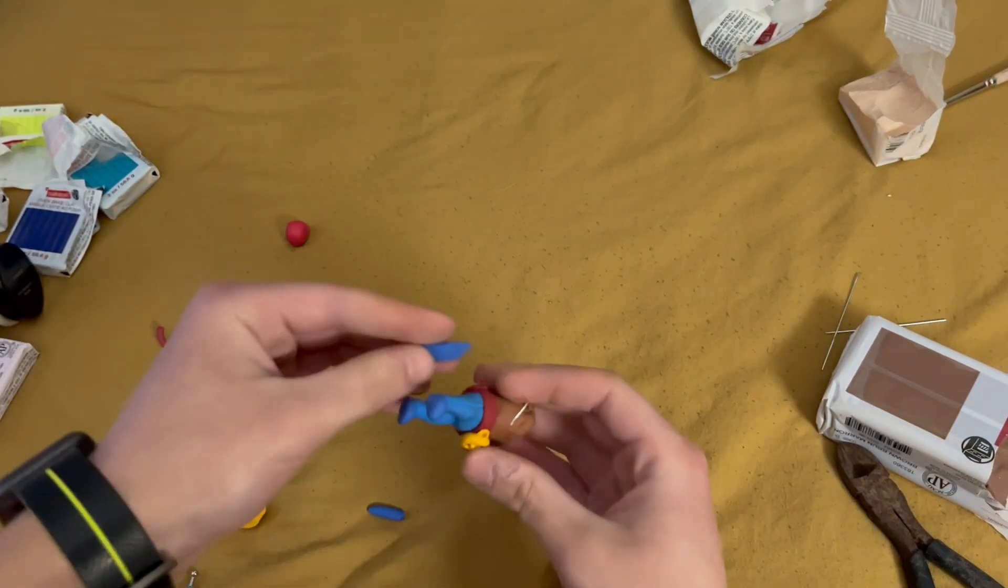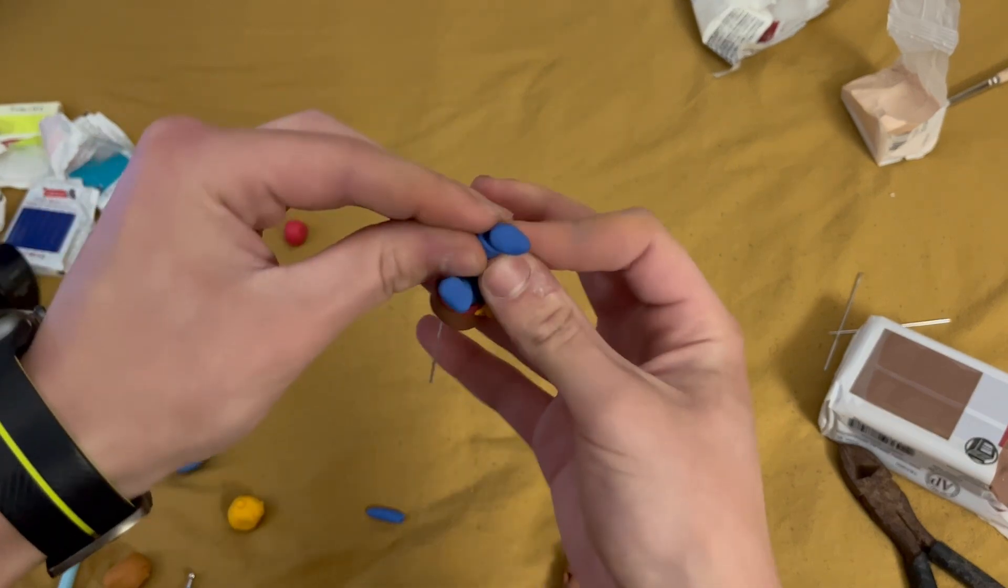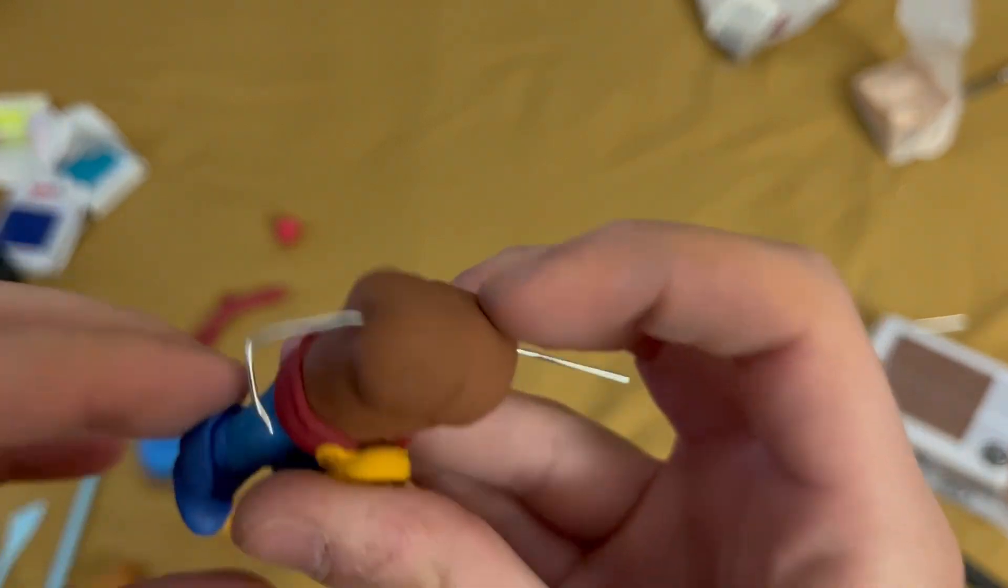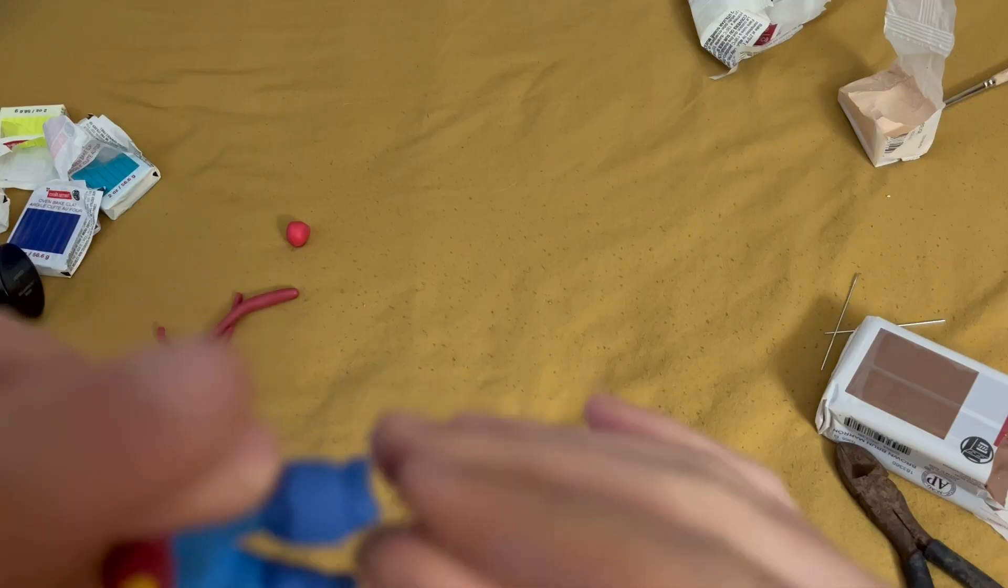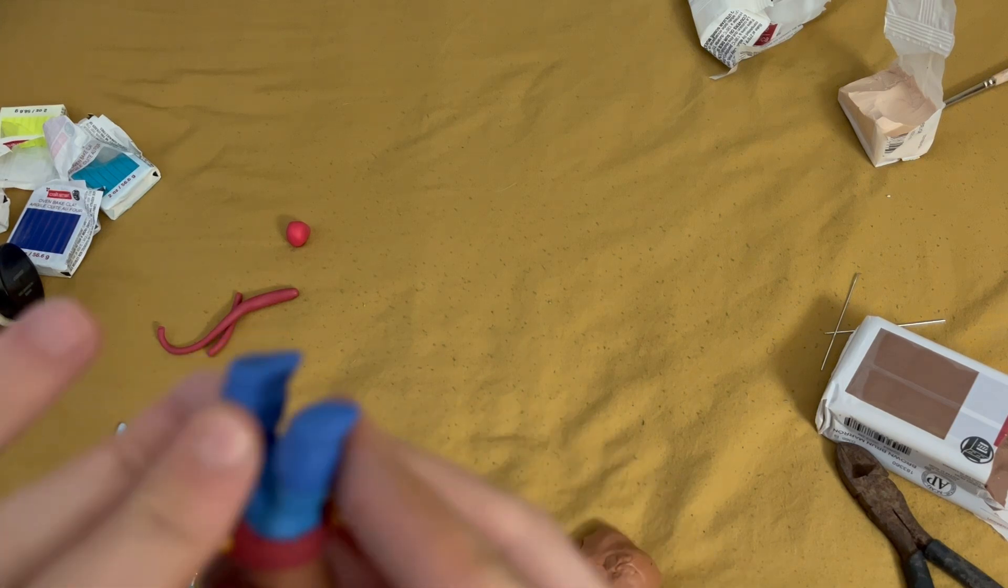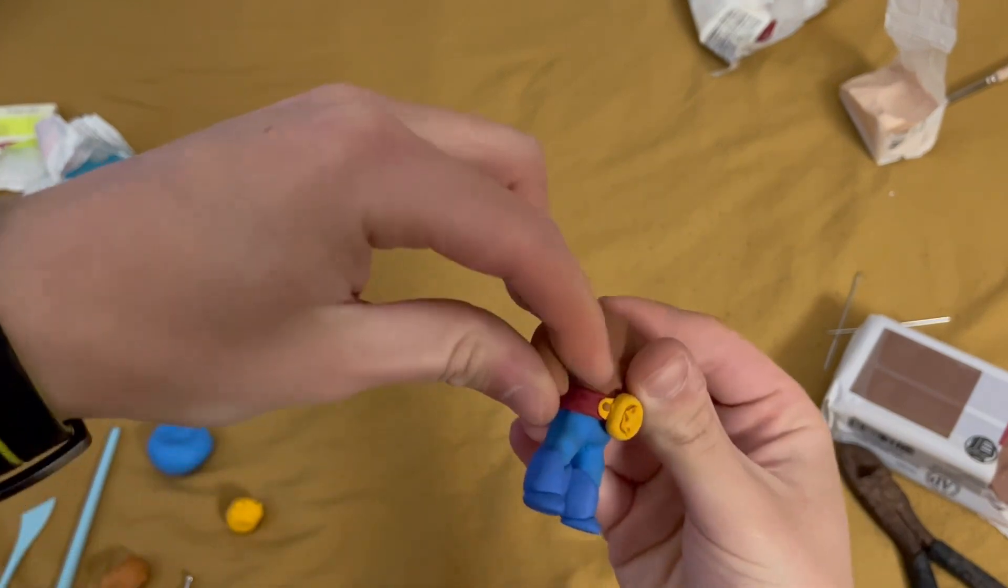After that, I add the dark blue shoes and the dark blue thing on his shoes to turn them into boots. I then bulk this up once I added it to both sides because I felt that what I already had was a little bit too skinny. Once the feet are done, it's time to finally move on to the arms.